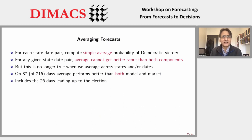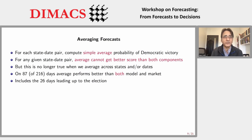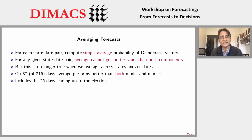One way to construct a hybrid forecast is to just take the average — if the market says 60% and the model says 78%, just take 75%. As a synthetic forecast for any given state-date pair, the average can't outperform the better component, but if you average across states, that need not be the case. The average can actually do better, especially if the model and market are making different kinds of errors in different types of states. The Brier score punishes really big errors, so avoiding the most egregious ones matters — and in fact the average does better.